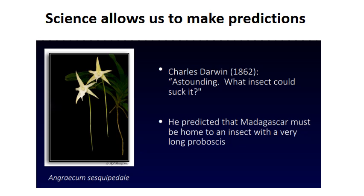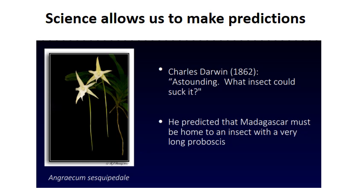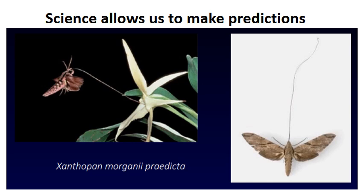Science is a way of knowing, and good scientific theories allow us to make predictions. Darwin's theory of evolution is among the best examples. When Darwin observed Star of David orchids — now known as Darwin's orchids — in Madagascar, with their enormous nectar tubes, he predicted there must be an insect with a very long proboscis to feed on them. Forty years after Darwin's death, a subspecies of African hawk moth was discovered in Madagascar with exactly that long proboscis, confirming his prediction.